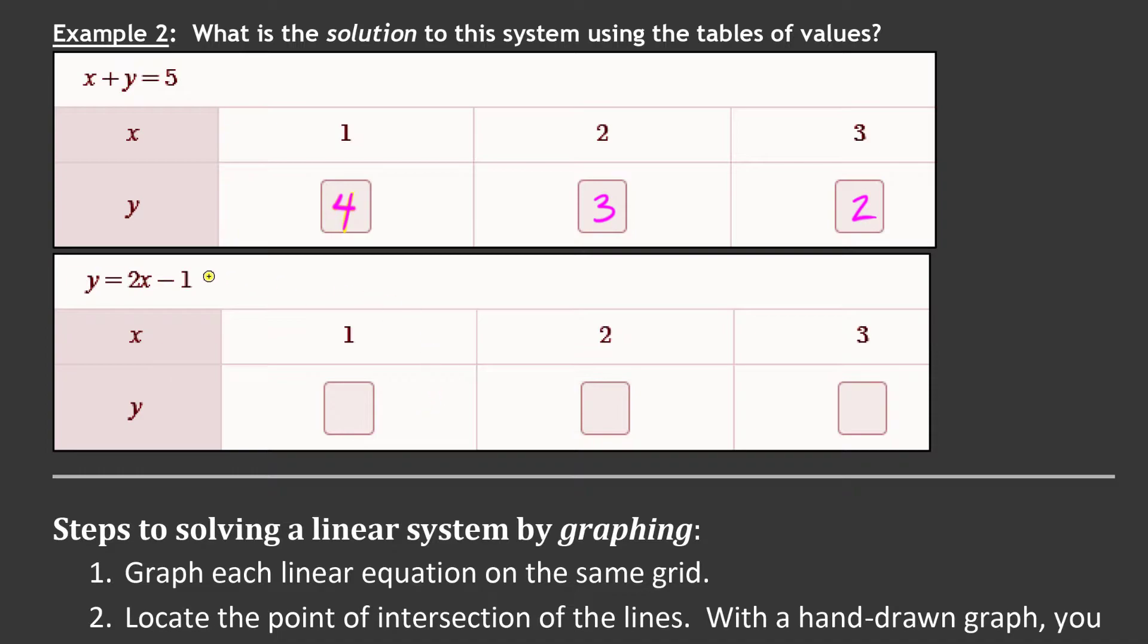We're going to do the same thing on the next table of values. It's a different equation. Put a one in there. Two minus one is one. Put a two in. Four minus one is three. Put a three in. Six minus one is five. Now, do we have a set of matching points? If I take a look at these two right here, one in four, one in one, they don't match. Two in three, two in three, they match. So this right here is a matching point on both systems. We didn't have to graph it. We can see that that is going to be the solution. So the solution is an X of two and a Y of three.